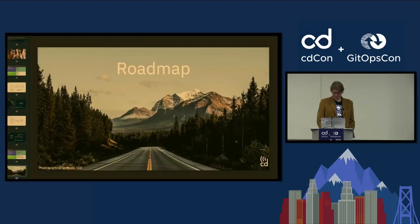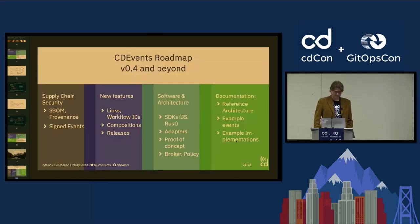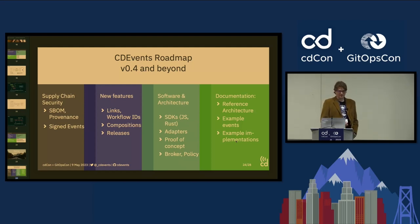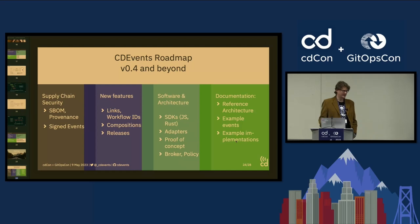On the roadmap, we want to expand supply chain security features. Right now we have the artifact-signed event, but we want a better data model in CD Events to capture information about SBOMs, provenance, attestation, and all the features important to supply chain security.